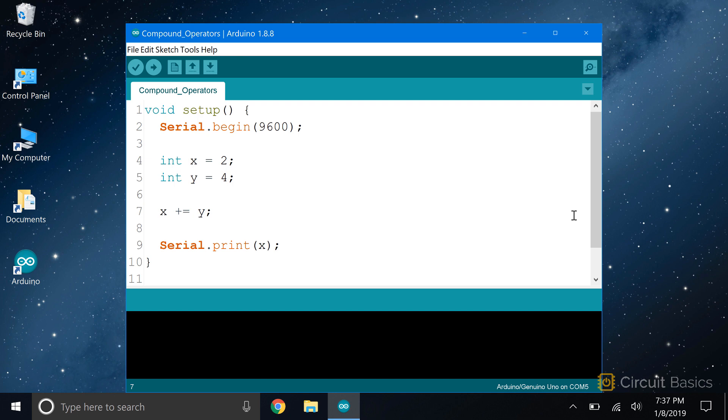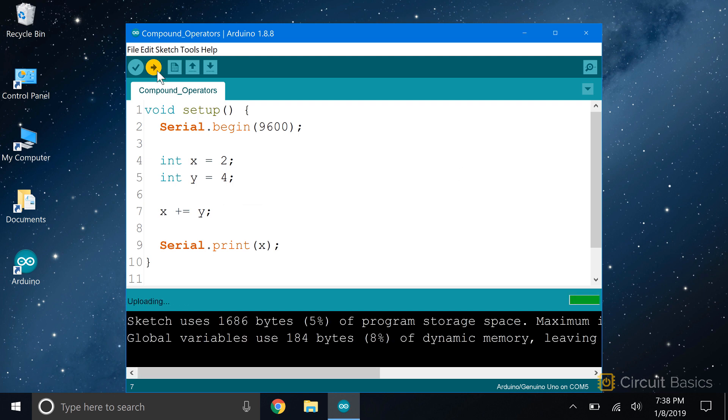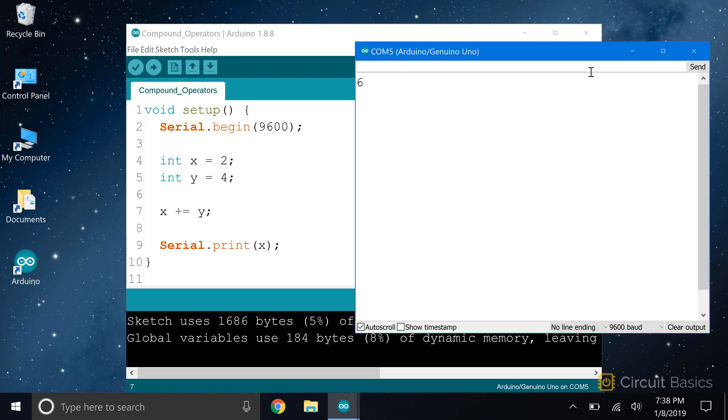So you have two variables, x and y. x is set equal to 2 and y is set equal to 4. To use the compound addition operator on these variables, we can write x plus equals y. The result should be 2 plus 4, or 6. Let's upload this and see. Yep, the result is 6.